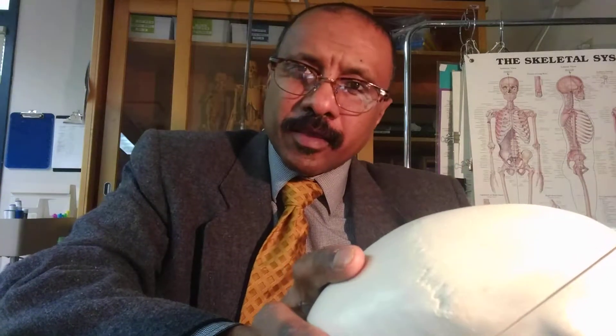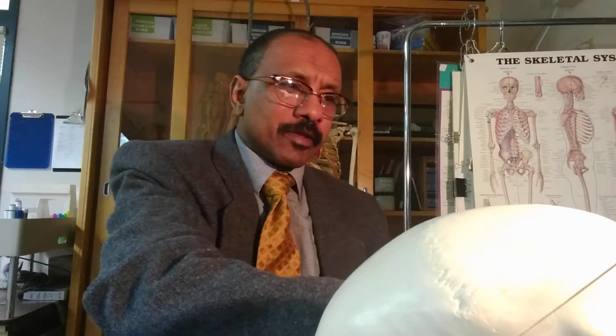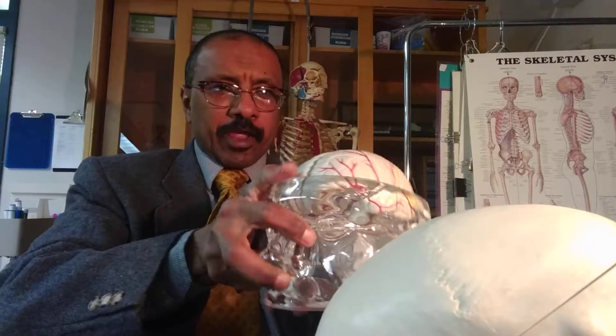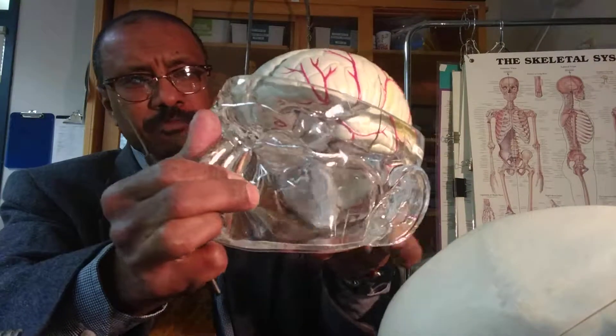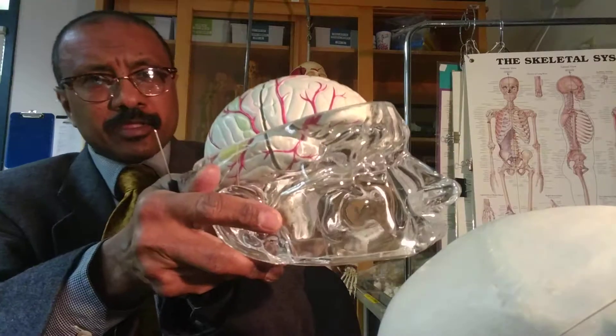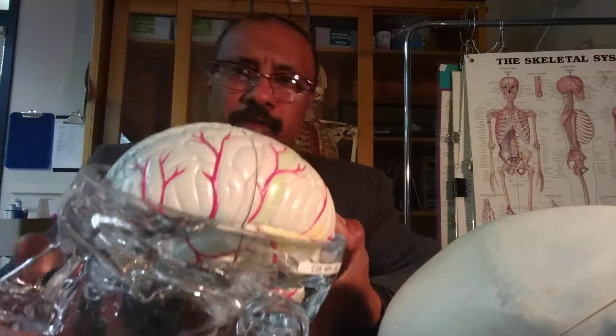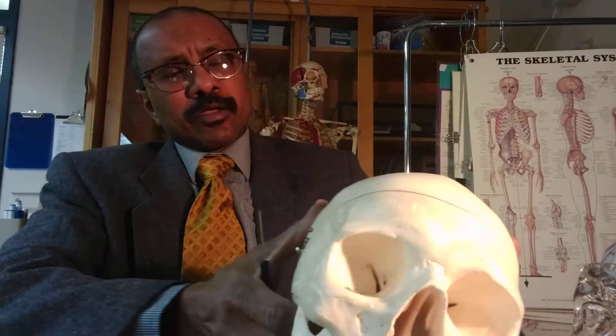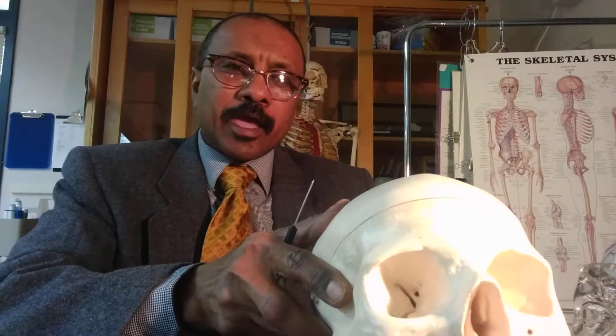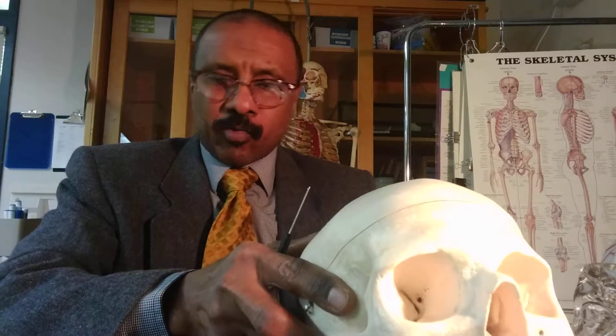The skull is the house of the brain. Look at the brain here in this model — this is a human brain and this is a model of a human face. It's a transparent glass one, so it shows exactly what we're talking about. Here is our brain, living and existing inside the skull, which is also known as the cranium. The skull has flat bones and also irregular bones.